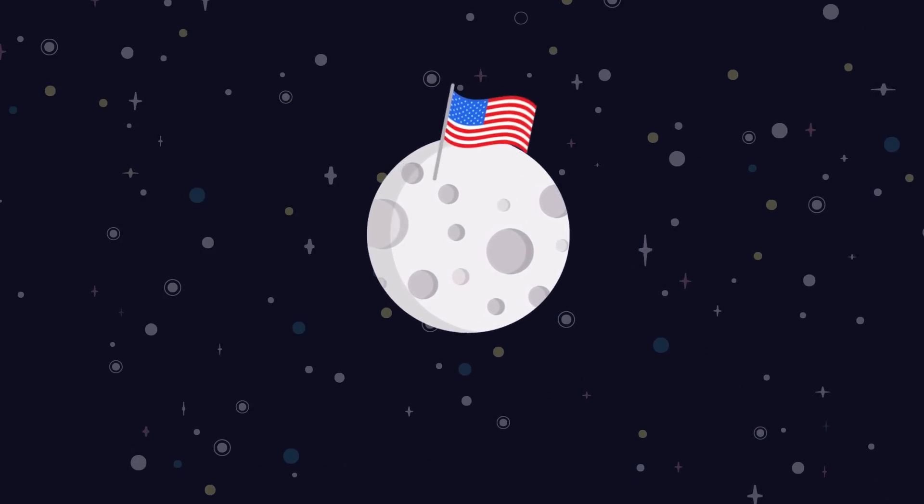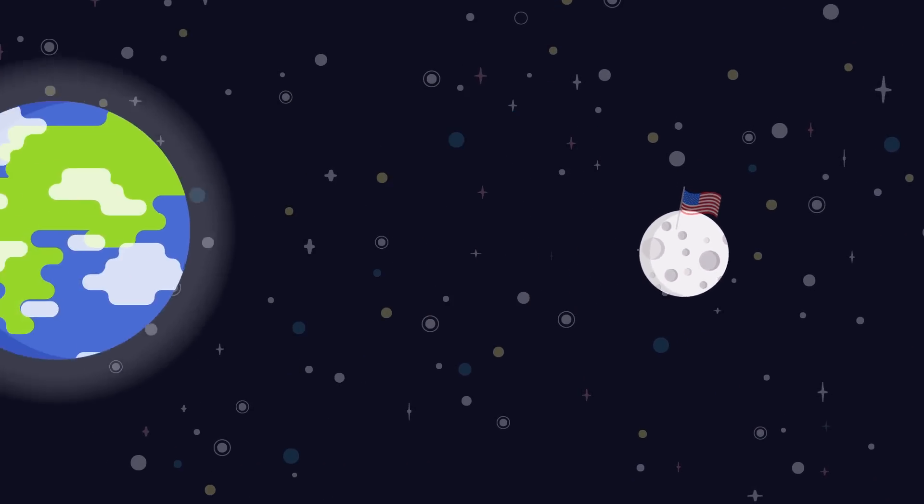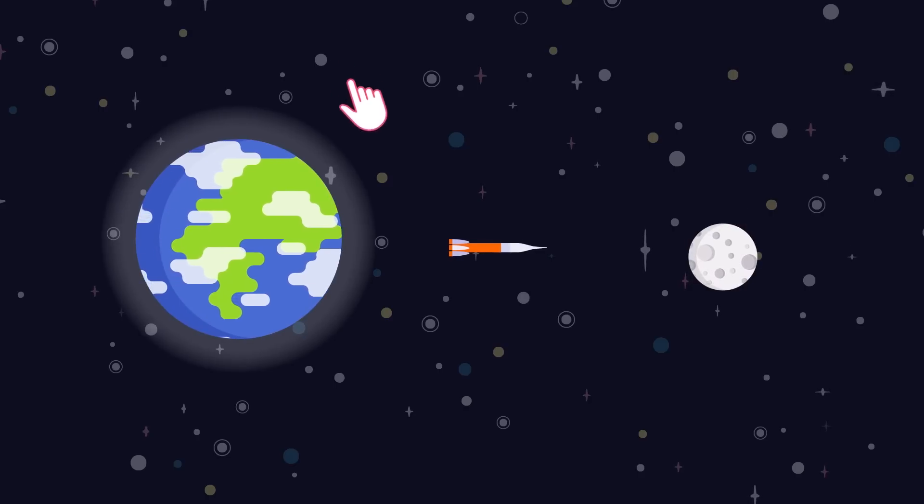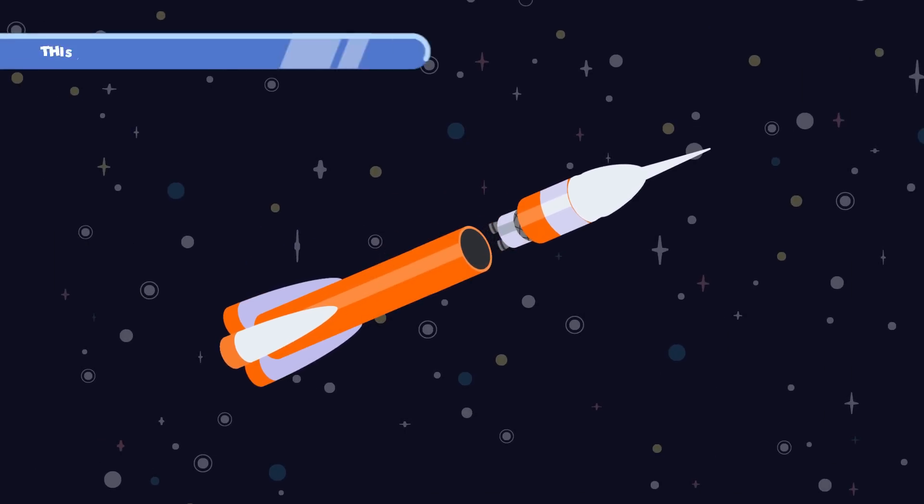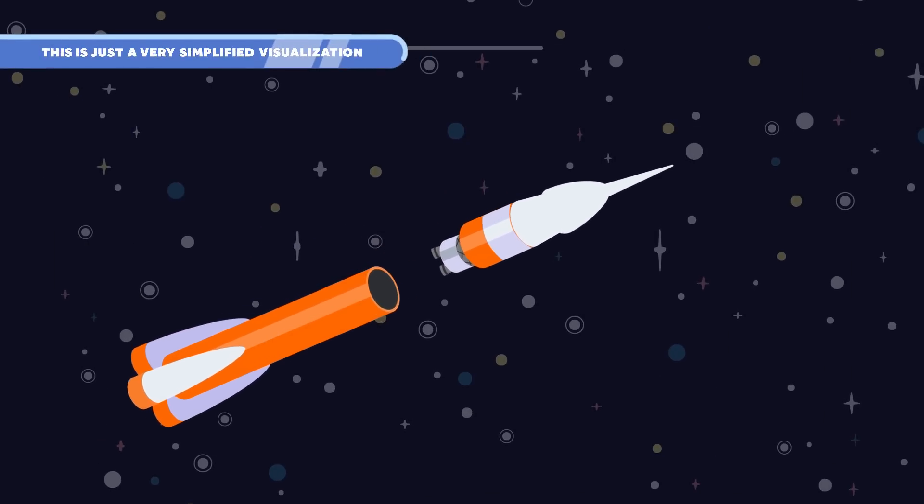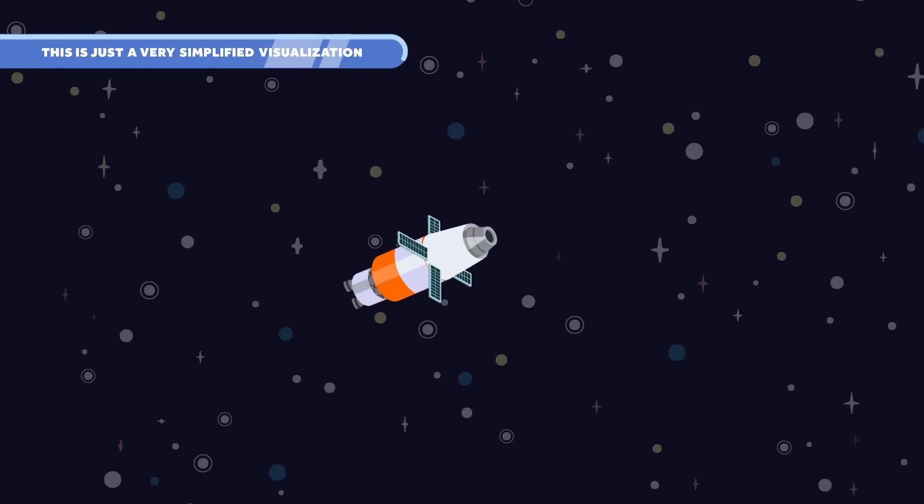The moon is our closest neighbor, and we've even been there before. And right now, we're just a few years away from visiting it again. NASA is planning the Artemis 3 mission, aiming at sending humans to the moon again, but this time, not just to visit.